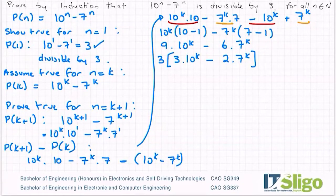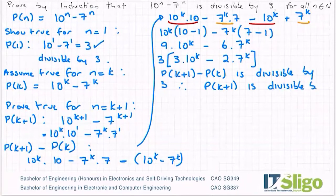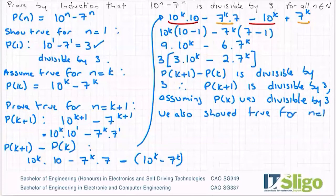So I can conclude that p to the power of k plus 1 minus p of k is divisible by 3. Therefore, p of k plus 1 is also divisible by 3, assuming p of k was divisible by 3. And we also showed true for n equals 1.